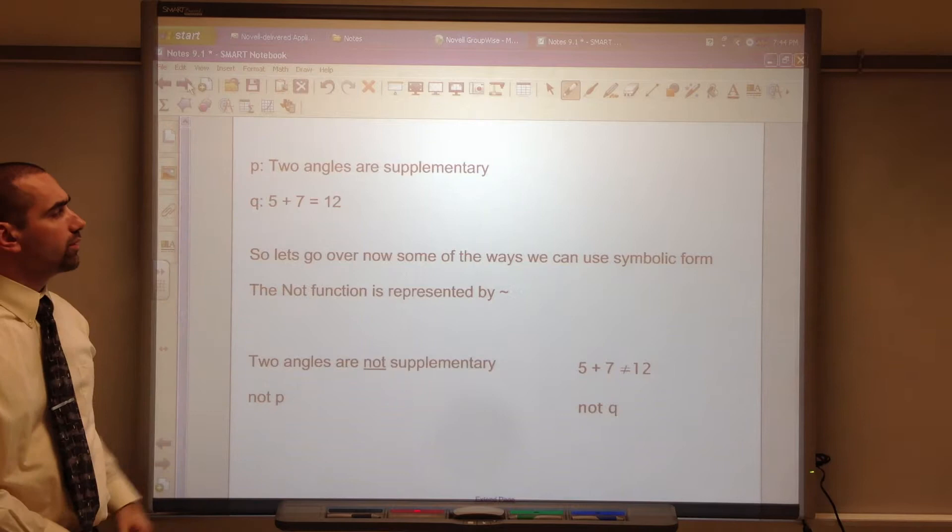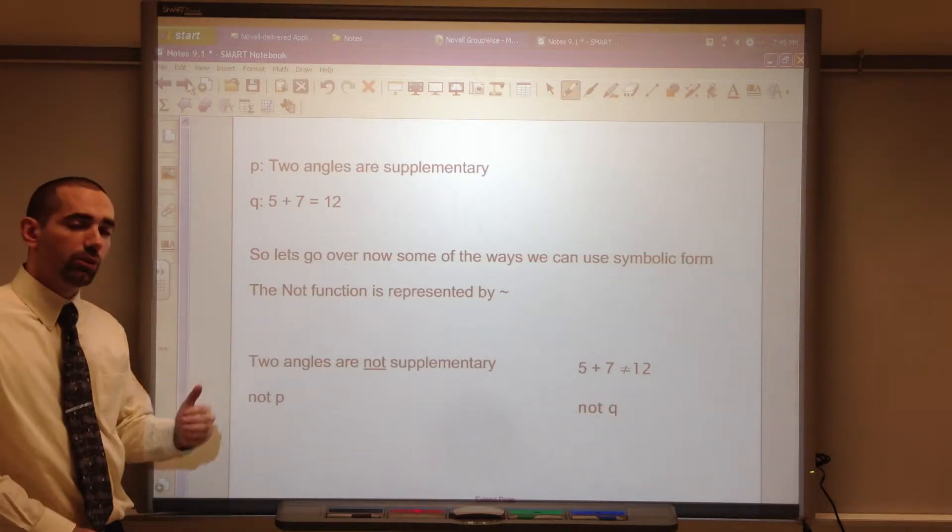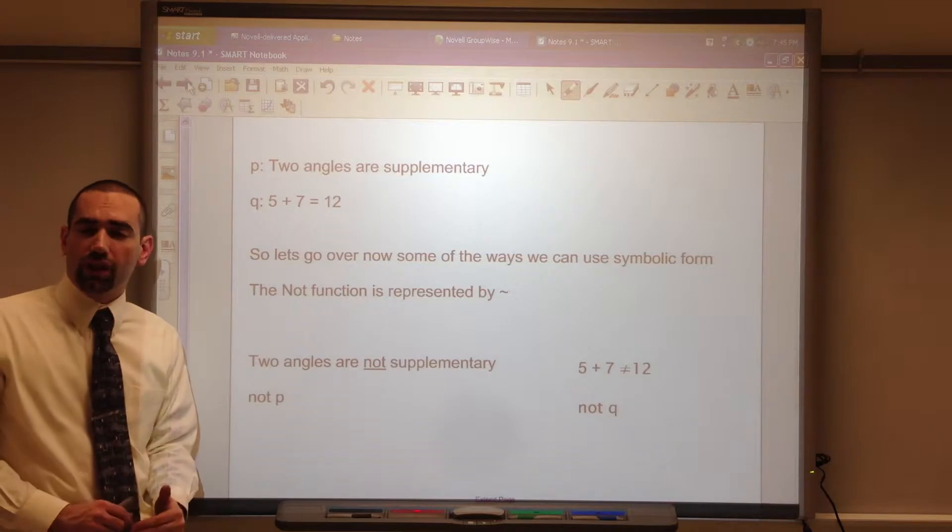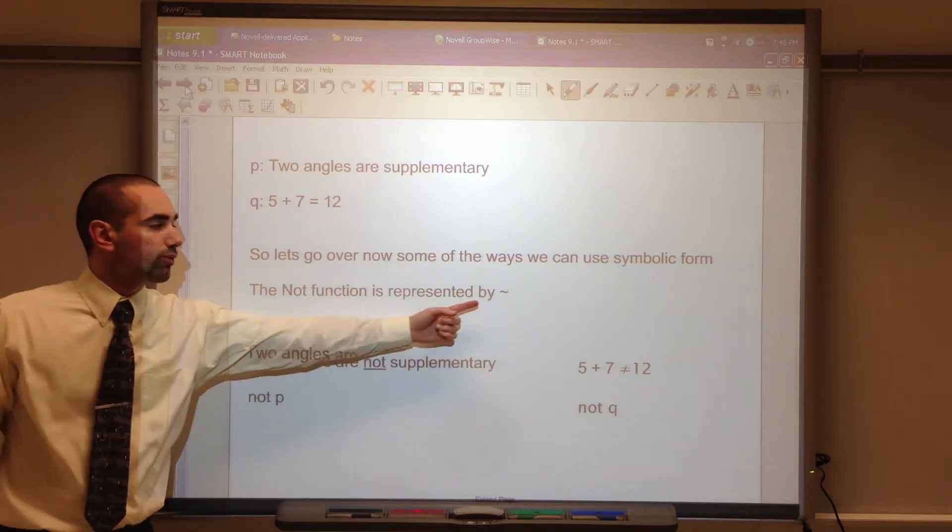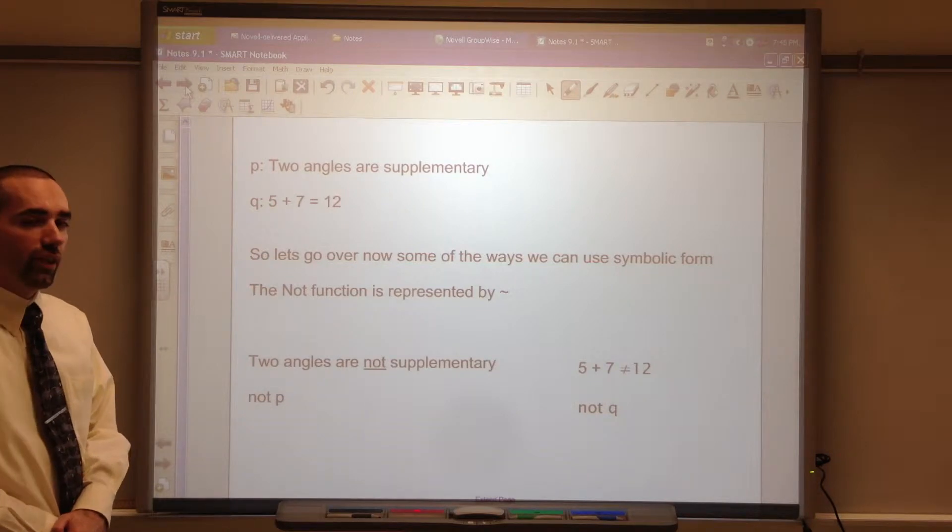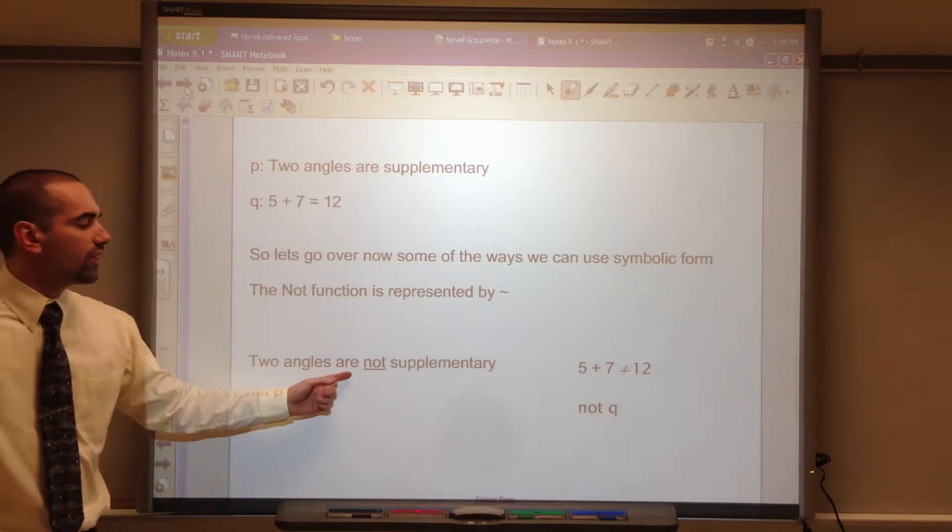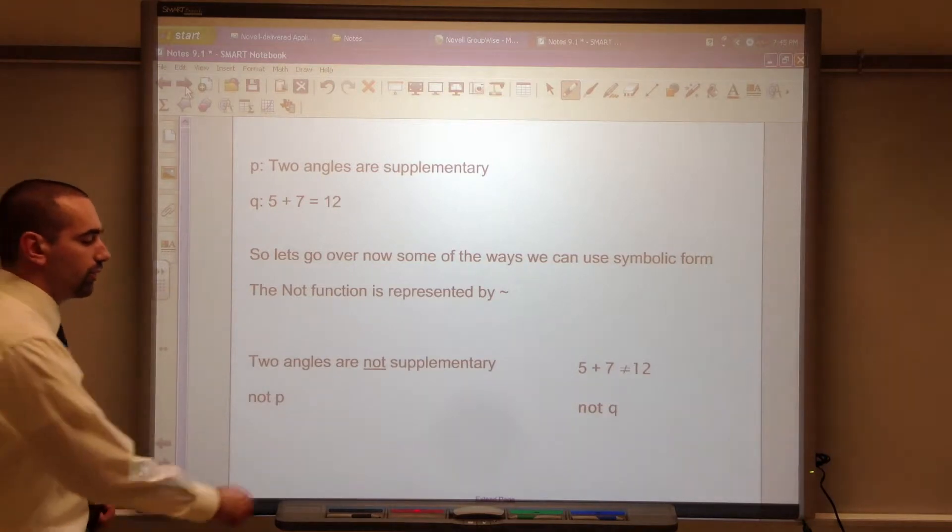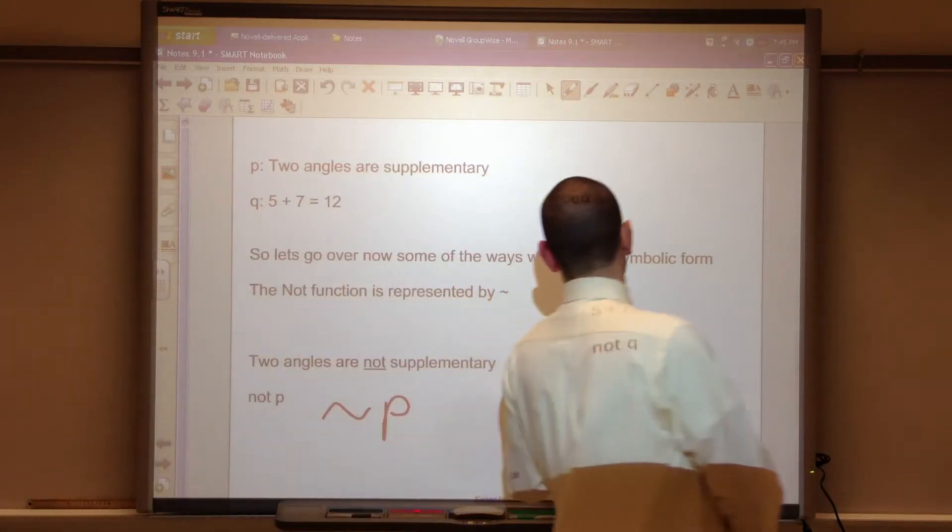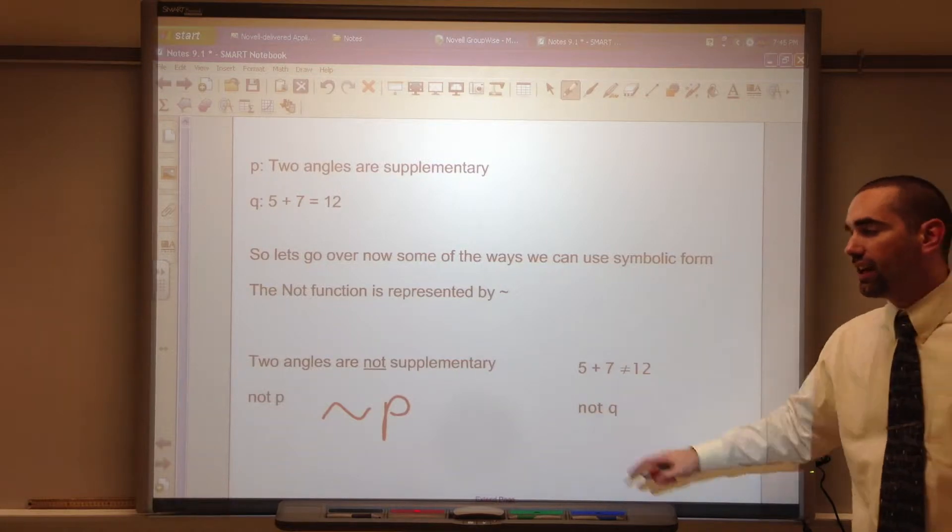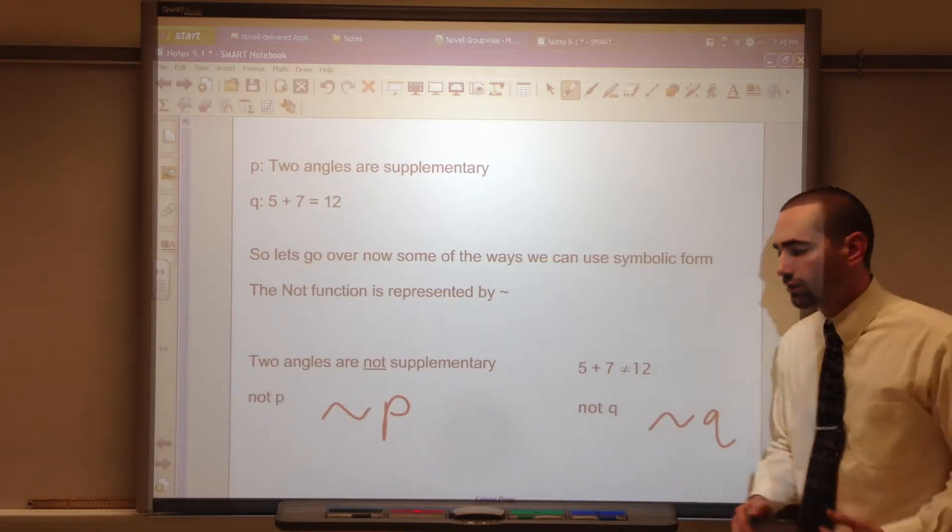We've got two statements, P and Q. P, two angles are supplementary. Q, five plus seven equals twelve. We're going to be using these two same statements a number of times. Let's look at some of the ways we can use symbolic form. The NOT function is represented by the little wavy line. Two angles are NOT supplementary. That's NOT P, so we write it as NOT P. Here, five plus seven doesn't equal twelve. That's NOT Q. We're just putting that symbol in front of the letter to represent NOT.